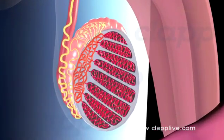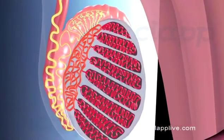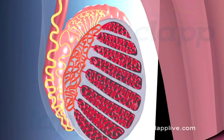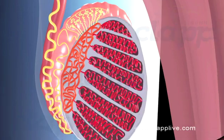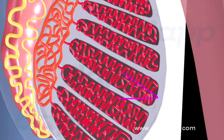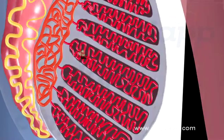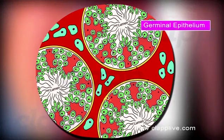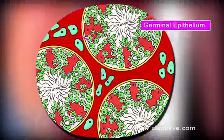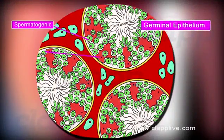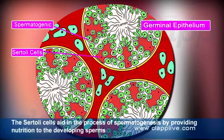The testis is enclosed in a dense fibrous coat called the tunica albuginea, inward growth of which divides the testis into around 200-300 lobules called testicular lobules. Each lobule consists of 1-3 highly coiled seminiferous tubules. These tubules are lined inside by germinal epithelium, which consists of two types of cells: cuboidal cells called spermatogonia and pyramidal cells called Sertoli cells or nurse cells. Spermatogonia, or the sperm mother cells, produce sperms. Sertoli cells aid in the process of spermatogenesis by providing nutrition to the developing sperms.